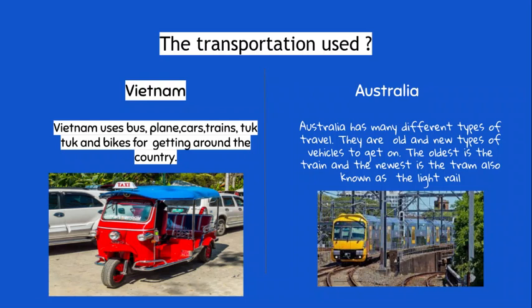Australia has many different types of travel. There are old and new types of vehicles to get on. The oldest is the train and the newest is the tram, also known as the light rail.